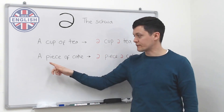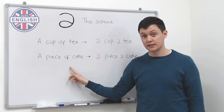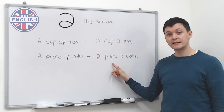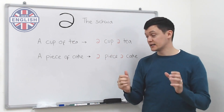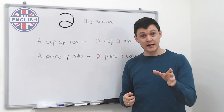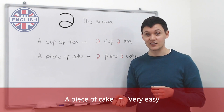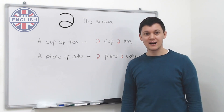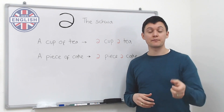The next one is 'a piece of cake' — again two grammar words reduced the same way, so it becomes 'a piece a cake.' Do you know what 'a piece of cake' means as an expression? It means something is very easy — 'That exam was a piece of cake.' It's a common expression meaning something is easy.